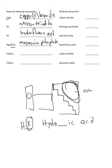Fe(OH)3: Fe is iron, which is in the D block, so we need Roman numerals. OH is hydroxide, which has a charge of negative one. There are three of them, giving a total of negative three. Since we have only one iron, iron must have a charge of plus three. Therefore we call it iron(III) hydroxide.